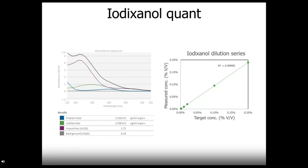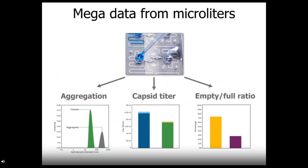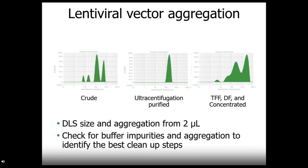And if iodixanol is part of your process, it is useful to know exactly how much is in your sample and to check on the iodixanol concentration after each buffer exchange. Stunner can help out here as well and will detect iodixanol in your sample as low as 0.0005% by volume. So, from only two microliters, Stunner combines UV-Vis, DLS, and SLS data to tell the whole story about your AAV sample, delivering mountains of data about sample aggregation, AAV full and empty capsid titer, and empty full ratios.